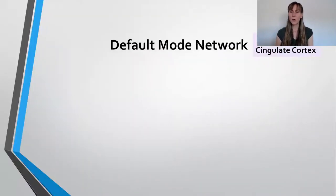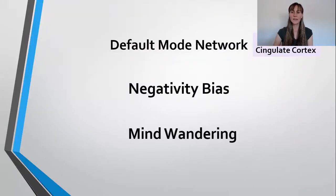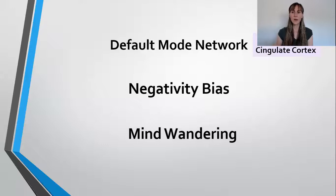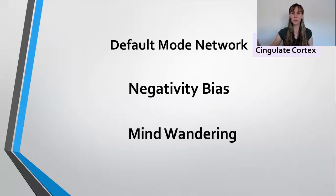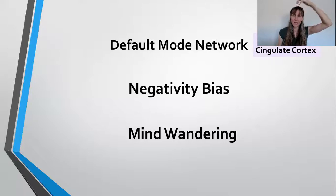The default mode network is also associated with negativity bias and mind wandering. It covers the posterior cingulate cortex, which is kind of midline in the back — that's one of the main areas, though about 10 areas light up. The default mode is kind of midline but also involves some lateral parts.